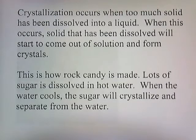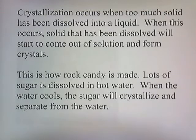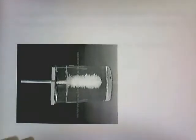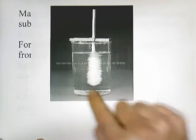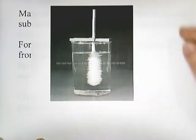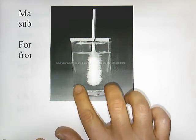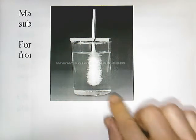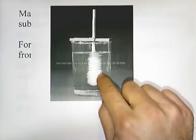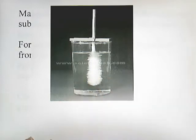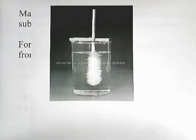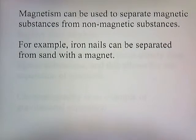Crystallization occurs when too much solid has been dissolved in a liquid — the dissolved solid starts to come out of solution and form crystals. This is how rock candy is made: dissolve lots of sugar in hot water, and when the water cools, the sugar crystallizes. A metal rod is placed in the solution, and as the water cools it can no longer keep the sugar dissolved, so sugar crystals precipitate out, bond together, and become physically separated from the water.